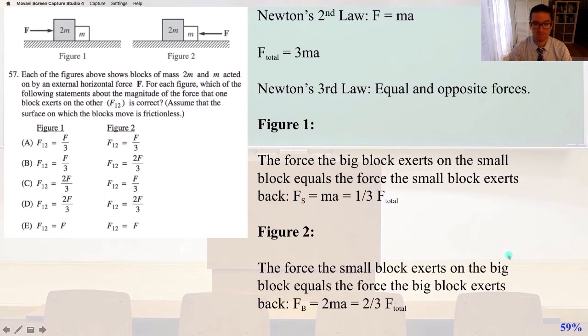Then we're going to apply Newton's third law, equal and opposite forces. So, in figure one, the force the big block exerts on the small block equals the force the small block exerts back. So, the force of the small block equals ma equals 1 third F total. 1 third coming from the fact that it has 1 third of the total mass. In figure two, the force the small block exerts on the big block equals the force the big block exerts back. So, F of b equals 2 ma equals 2 thirds of the total force. Remembering that the total force was 3 ma. And so, that is answer B.